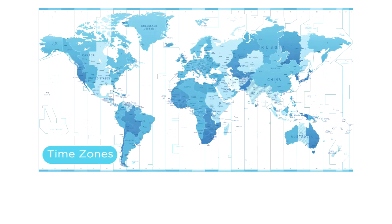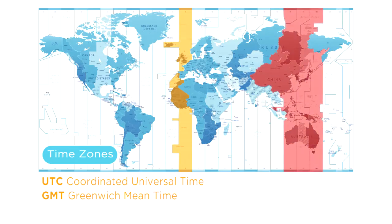The time zone in any place around the world depends on its longitudinal location. The reference point is known as UTC, or Coordinated Universal Time. It's sometimes called Greenwich Mean Time, or GMT. Australia and many parts of Asia are between 8 and 10 hours ahead of UTC.